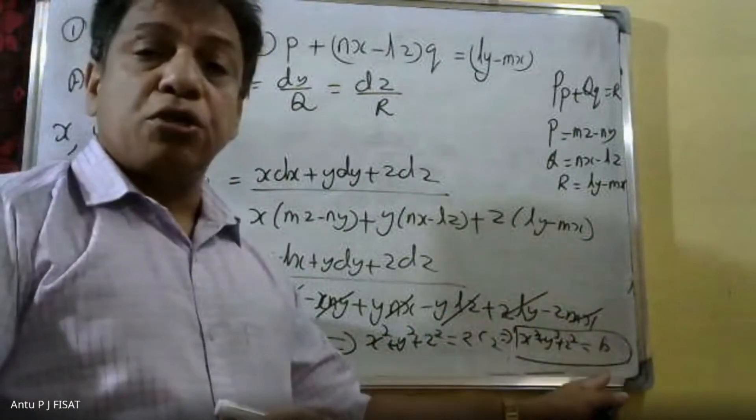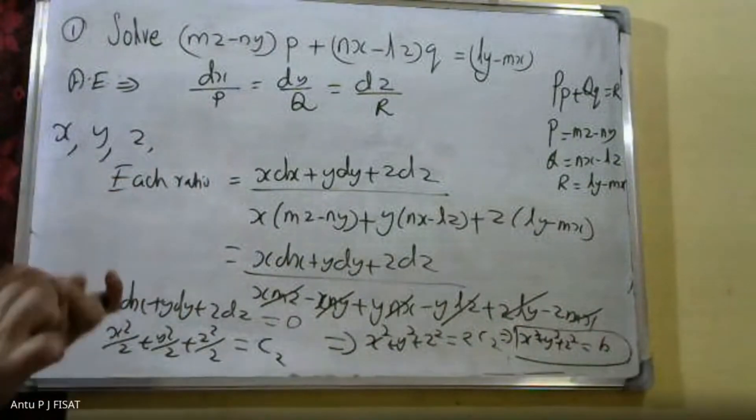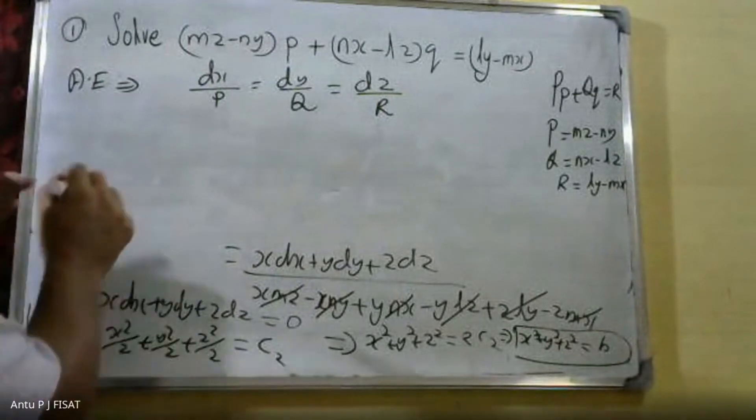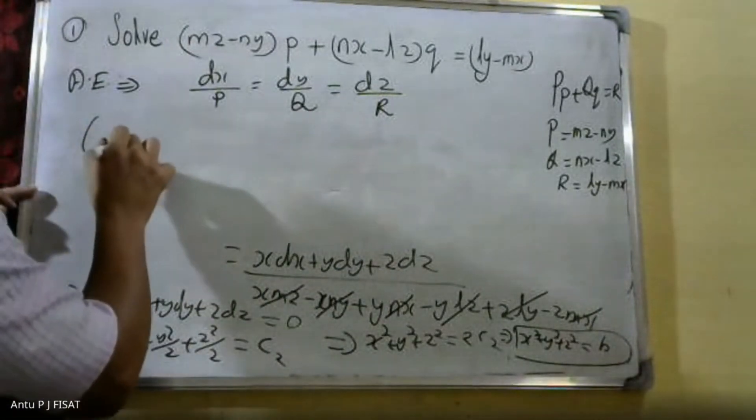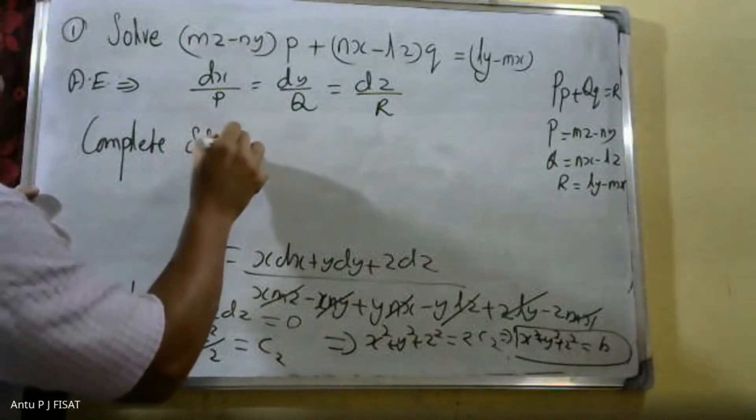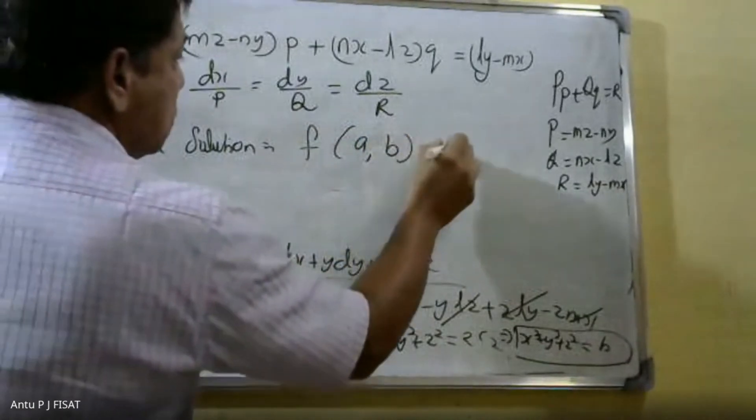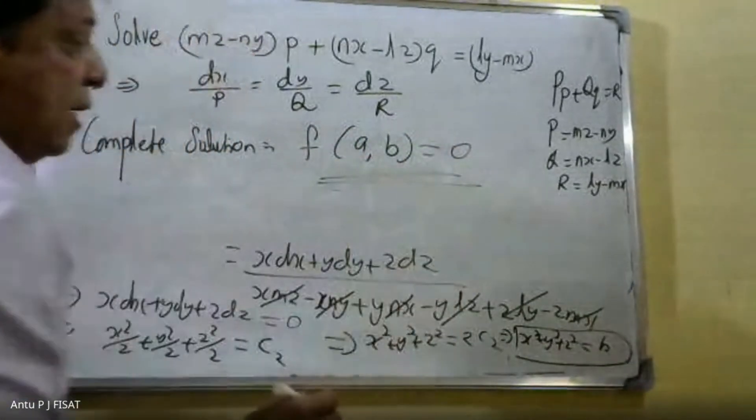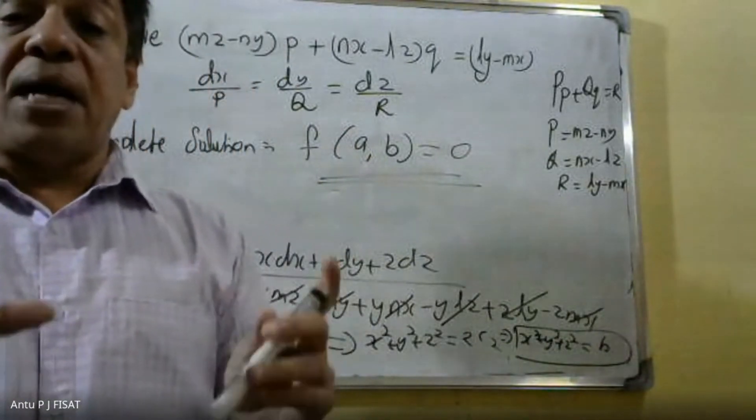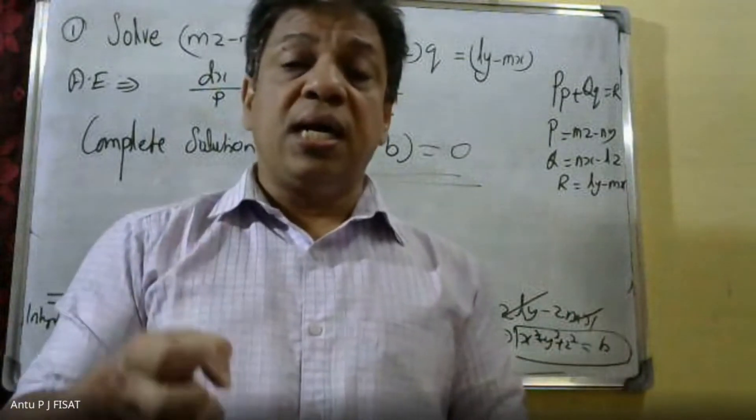Setting 2C₂ = B, we have x² + y² + z² = B. Therefore, the complete solution is F(A, B) = 0.